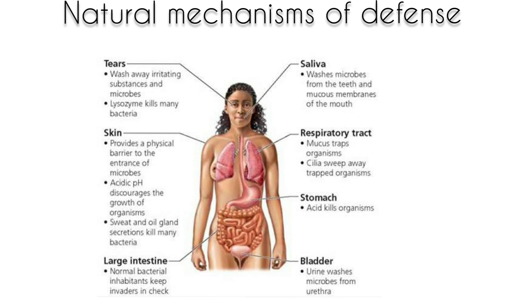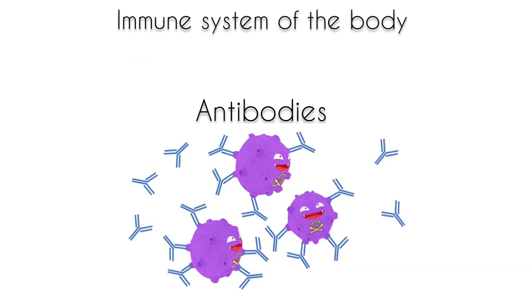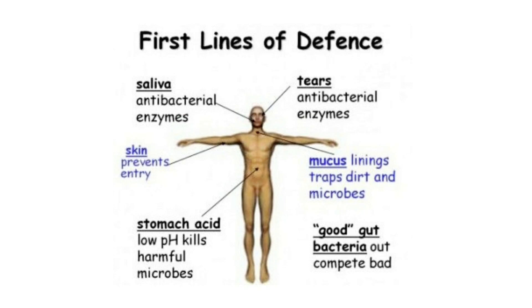Human beings possess some natural mechanisms that enable them to fight pathogens and remain healthy. The natural barriers include the skin, mucous membranes, tears, ear wax, mucus, and stomach acid. Also, the normal flow of urine washes out microorganisms that enter the urinary tract. The immune system uses white blood cells and antibodies, which are proteins, to identify and eliminate organisms that get through the body's natural barriers.